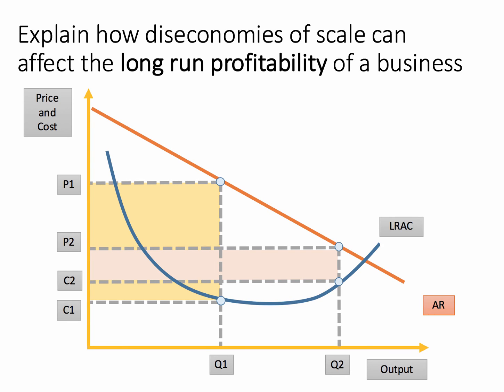I've taken out the marginal cost here — I don't necessarily need to show profit maximisation outputs. There are two outputs, Q1 and Q2. Q1 is close to where cost is at a minimum. You can sell Q1 at price P1, and the cost is C1, so the yellow box here represents the profit.